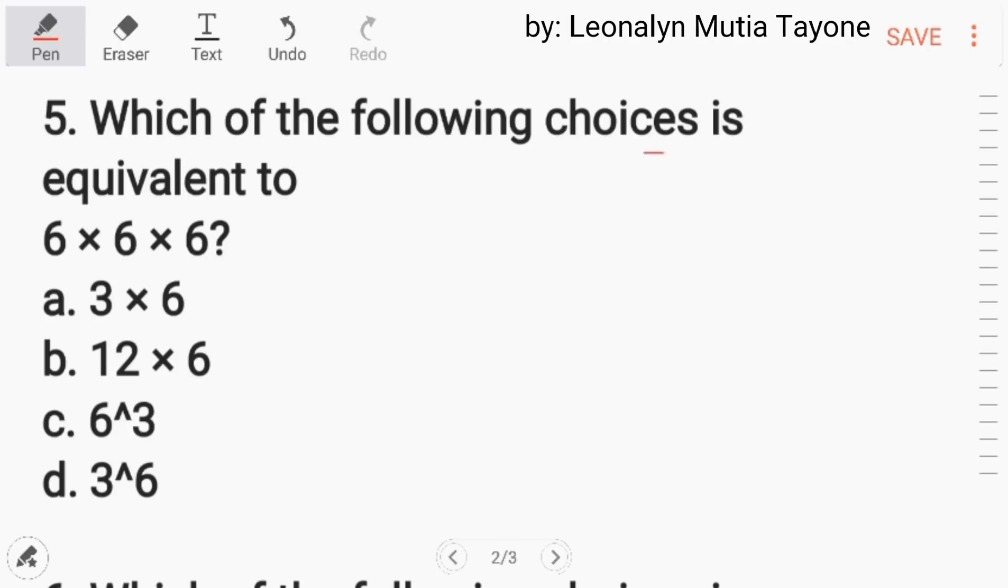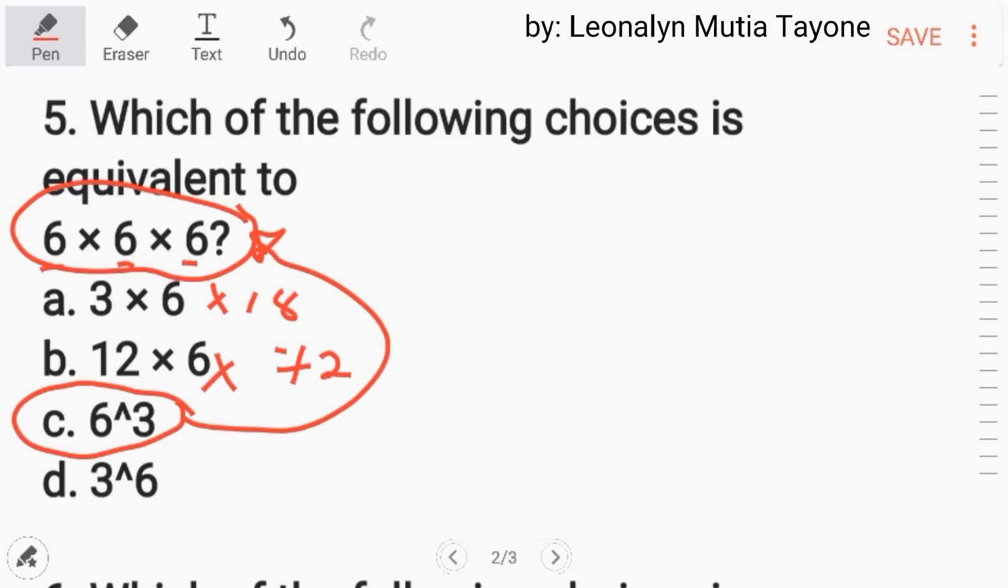Number 5. Which of the following choices is equivalent to 6 times 6 times 6? Kasi letter A is 3 times 6, and that is wrong, kasi 18 lang yan. 12 times 7, that is also wrong, kasi 72 lang yan. Letter C, 6 to the power of 3. This is the answer. Kasi yung 6 times 6 times 6, ito lang yung equivalent dyan. Meaning, 6 times 6 times 6, that is 216. This is also 216. Kasi ganito lang yan, 6 times 6 times 6.